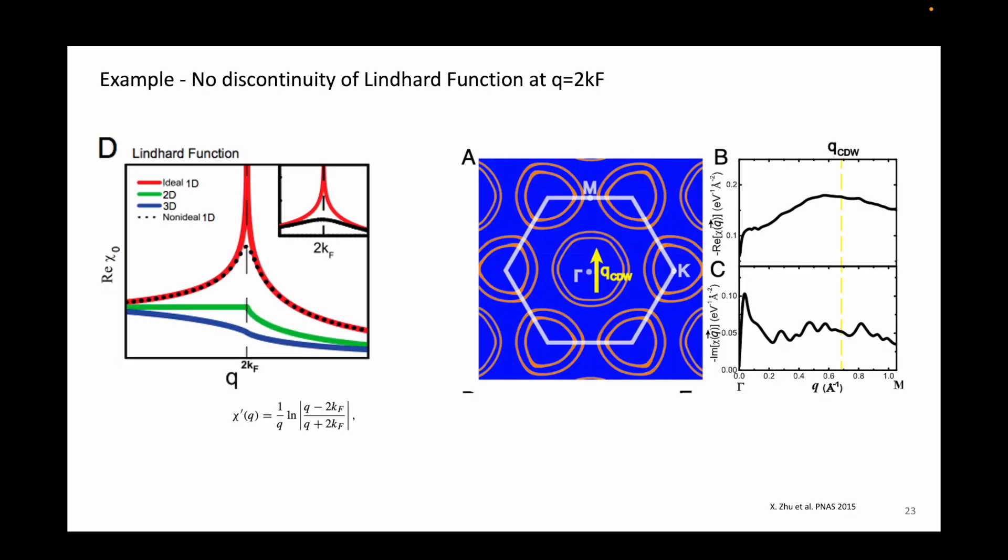One of the predictors of charge density wave is the discontinuity of the Lindhardt function at q equals 2kf. In an ideal 1D chain of atoms, it looks like a divergence, and in 2D, it is an undefined slope.